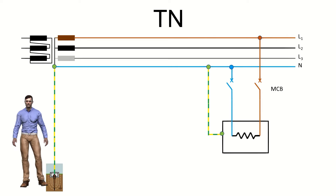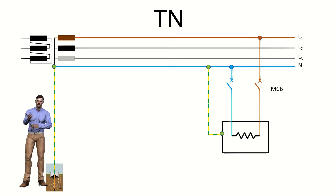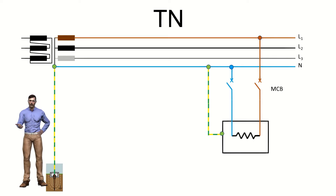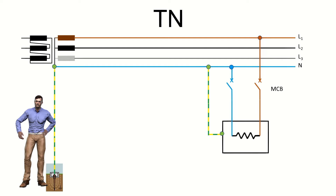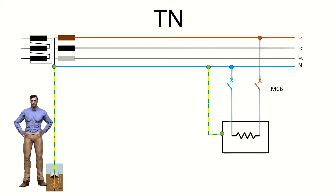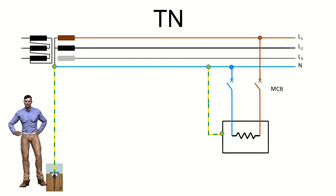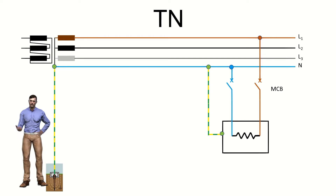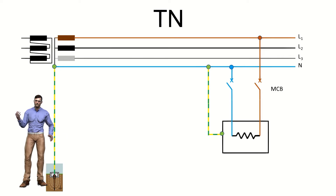In this way we can combine these letters to obtain the following schemes. In a TN system, the neutral of the supply is connected to earth directly, while the masses of the receiving loads are connected to the same earth connection of the neutral. The TN electrical diagrams can be divided into three types depending on whether the neutral and the protective conductor are separated or not.